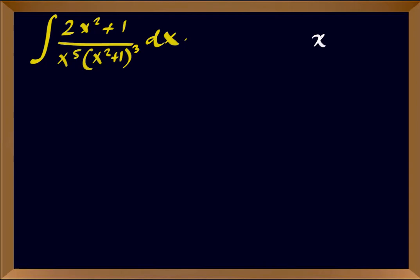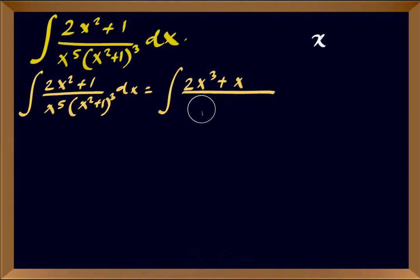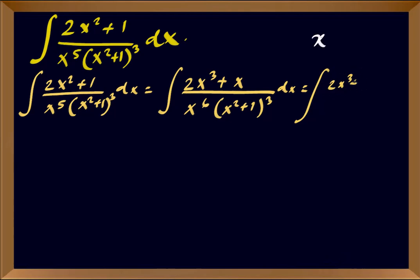If I multiply the numerator and denominator by x, the integral of (2x² + 1) over x⁵ times (x² + 1)³ dx will become the integral of (2x³ + x) over x⁶ times (x² + 1)³ dx.